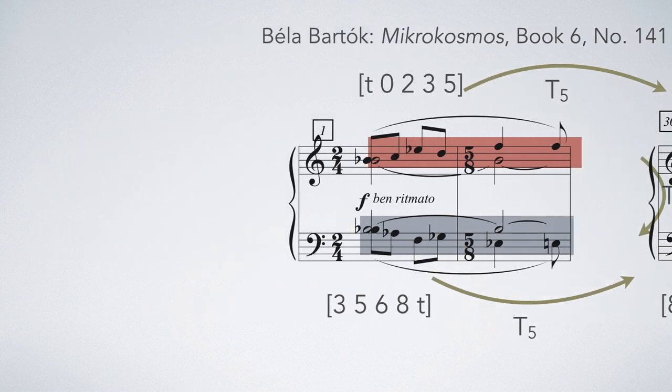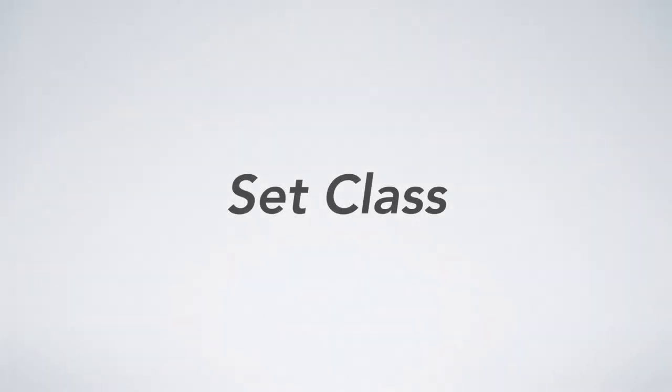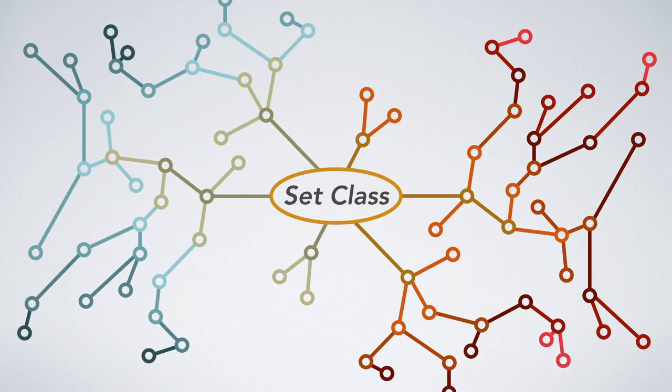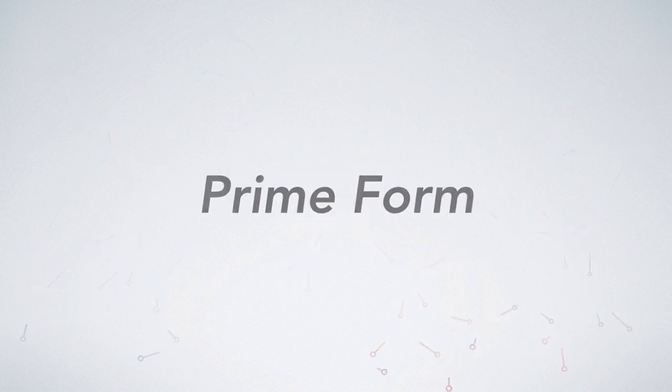This means they all belong to the same set class. All pitch class sets that are transpositionally and inversionally related belong to the same set class. We've already seen how this is true of major and minor triads. But because there can be so many ways a set class could show up, we need a standard way to categorize them. Enter prime form,